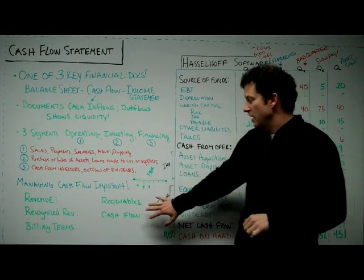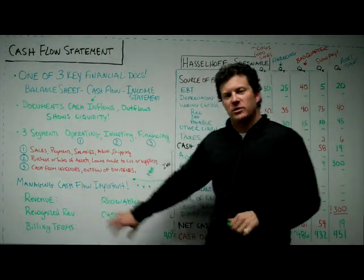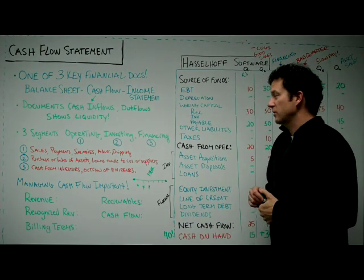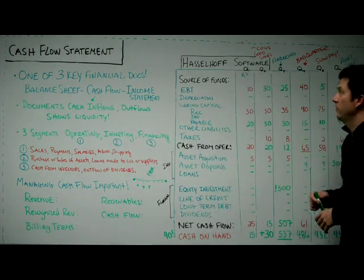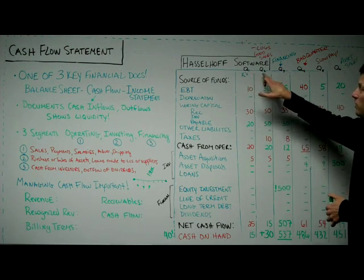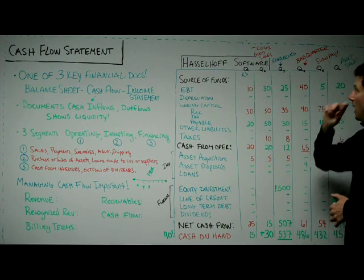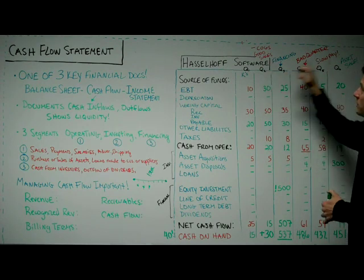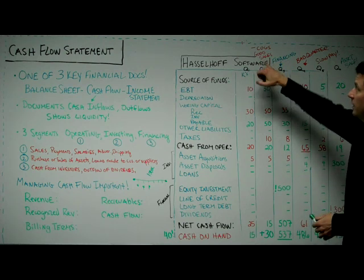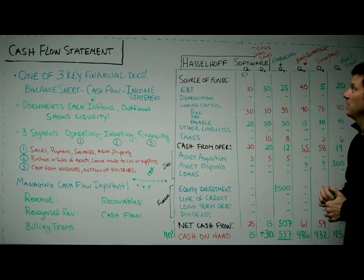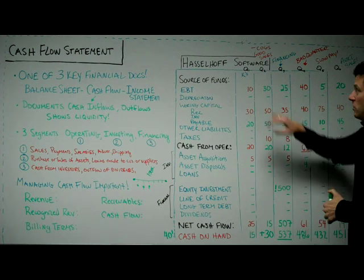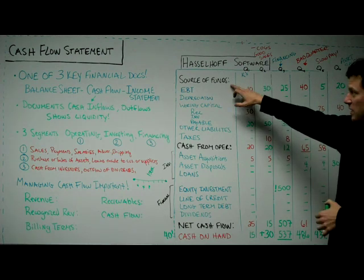Get to know these terms because you're going to have to decide how to apply these metrics to your own business, and you have to understand them in order to understand the cash flow statement. So let's look at the cash flow statement we've written up here. We're looking at Hasselhoff Software, going quarter one through quarter six. Something really interesting is going to happen that the cash flow statement will show.